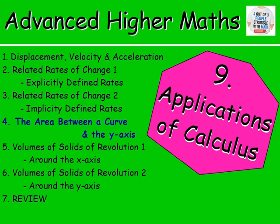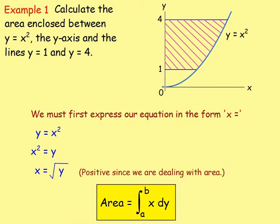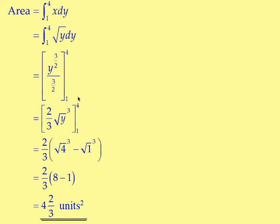After that, we looked at the area between a curve and the y-axis. In Higher, you integrated to find the area under a curve between x equals a and x equals b. But you can also find the area enclosed between the curve and the y-axis. Instead of integrating y with respect to x, you integrate x — written in terms of y — with respect to y. For example, with y equals x², rewrite it as x equals the square root of y, sub into the formula with limits 1 and 4, work through it, and remember the answer will be in squared units.